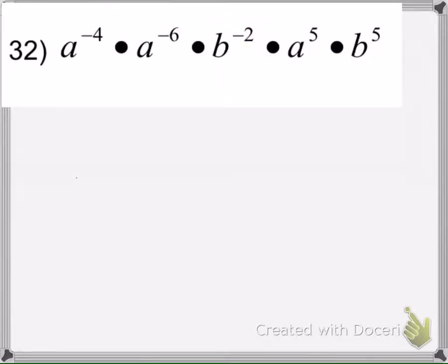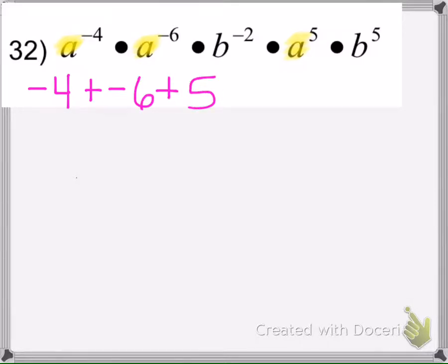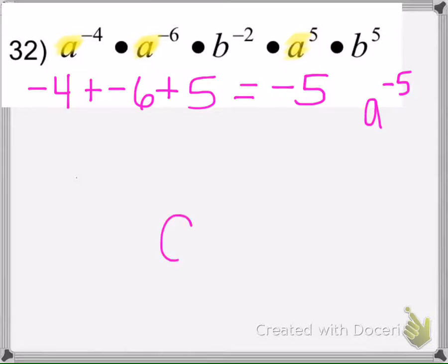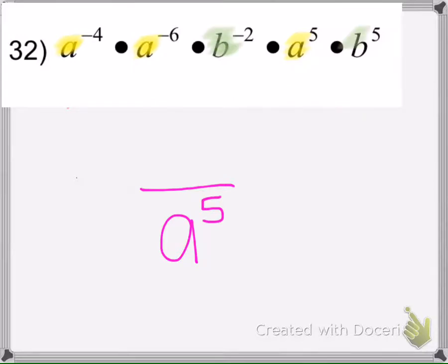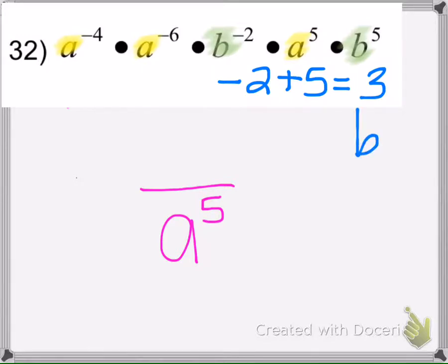In this problem we're multiplying, so we know the rule: if we're multiplying and the bases are the same, we add the exponents. Negative 4 plus negative 6 plus 5 equals negative 5, so since the exponent is negative it goes to the denominator. Then we have the same b bases, so we add those exponents: negative 2 plus 5 is 3, so since it's positive we have b to the third power in the numerator.